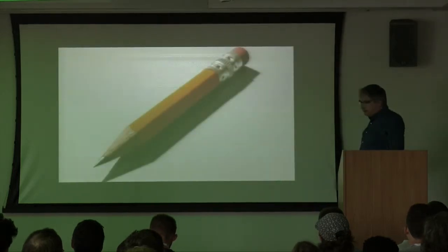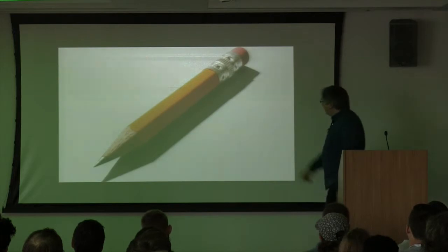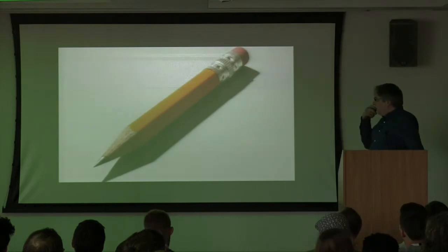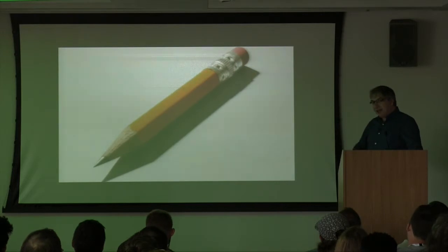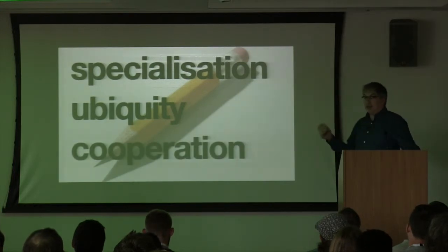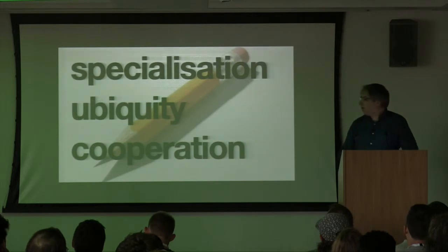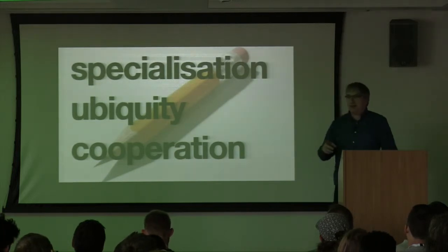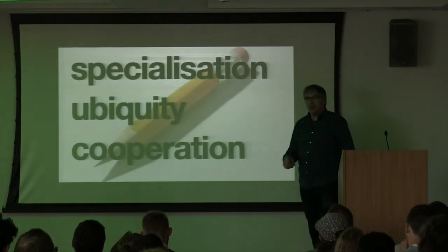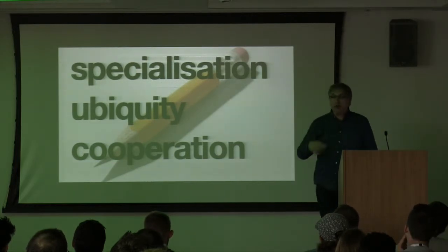Take a tool like the pencil. Great tool. It's got a fantastic affordance — you can see which bit you're supposed to use. It has a built-in progress bar, which is very handy. And it even has an undo. If you look at the history of technology, you start to notice some similarities with the history of biology — the same trends: specialization, ubiquity, and cooperation. No single human being can make a pencil; it requires cooperation — to fell the trees, to get the graphite, to put it all together.